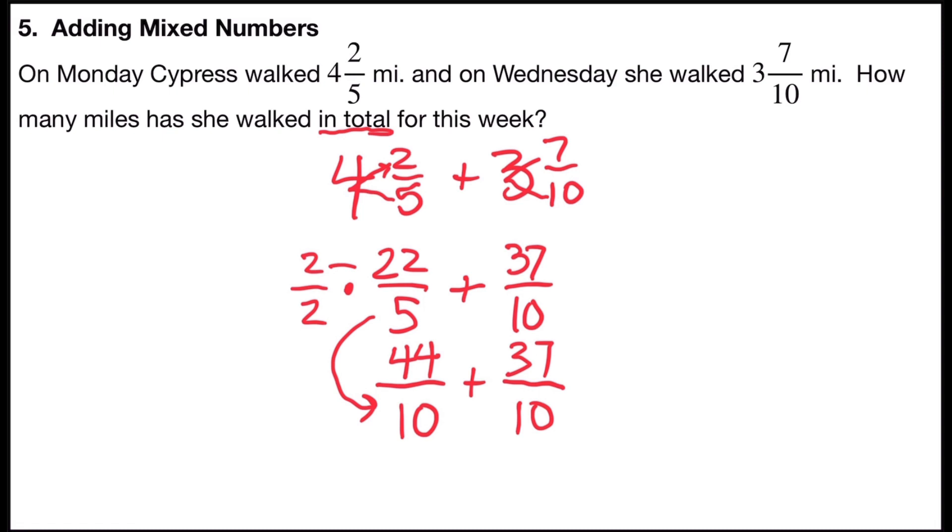Now, I can add together my numerators and just keep the same denominator. Forty-four plus thirty-seven is eighty-one over ten, eighty-one-tenths.